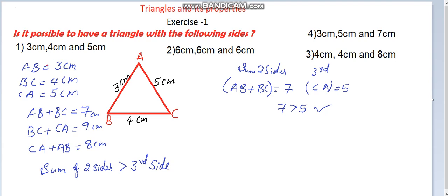AB plus BC equals seven centimeters, and the third side CA equals five centimeters. Seven is greater than five — condition satisfied. Next, BC plus CA equals nine centimeters, and the third side AB equals three centimeters. Nine is greater than three — second condition also satisfied.